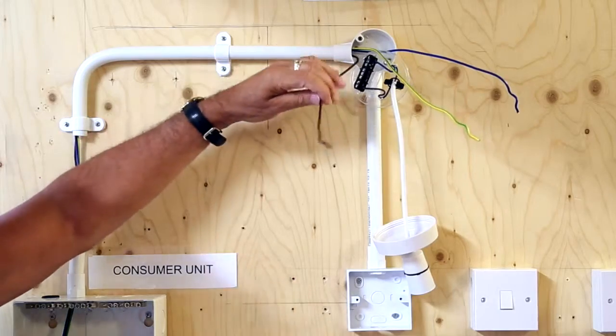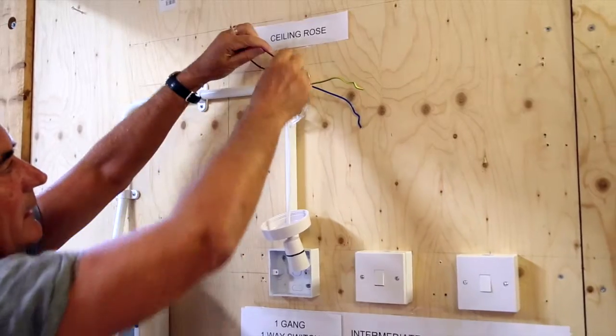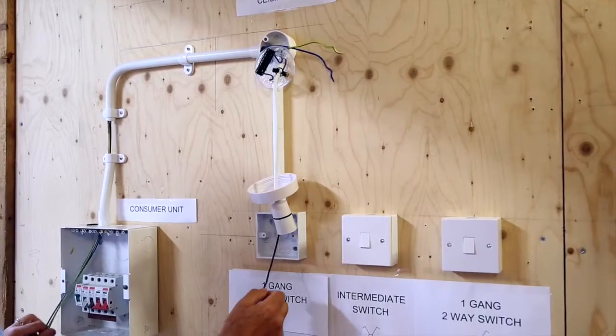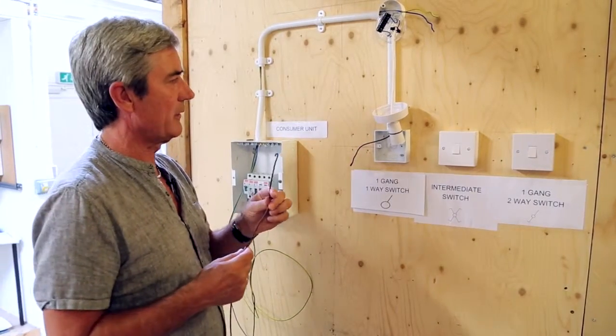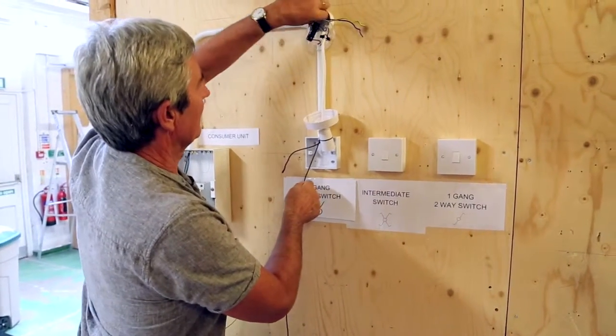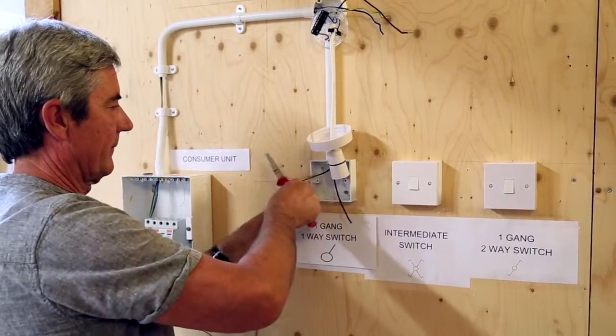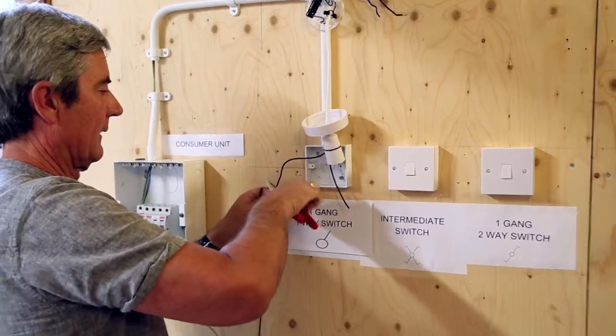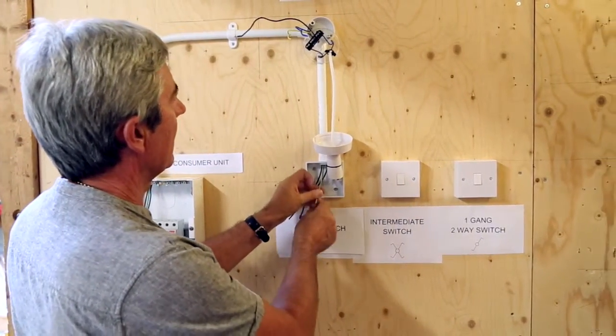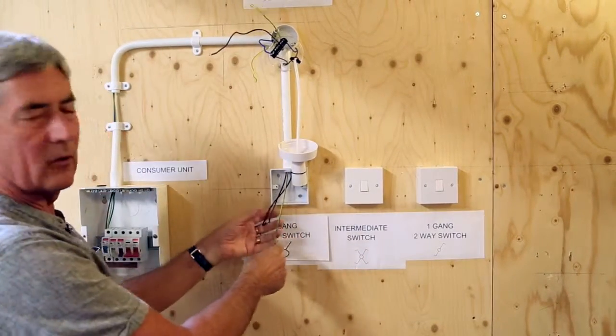We would then continue with the brown line cable through the conduit down to the first switch. We now need a return from that switch to the ceiling rose. Thus we cut off the excess at the switch. Also, most importantly is the continuation of the CPC or Circuit Protective Conductor which should be connected at all parts.